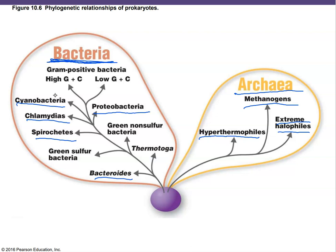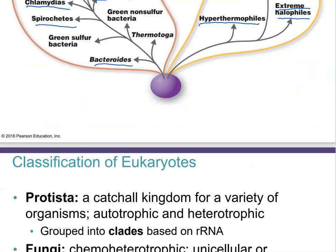Then we have all of the gram-positive bacteria, subdivided into those with high GC content versus low GC content. That refers to the nucleotides of their genome — G and C meaning guanine and cytosine — essentially the proportion of G and C in their genomes.